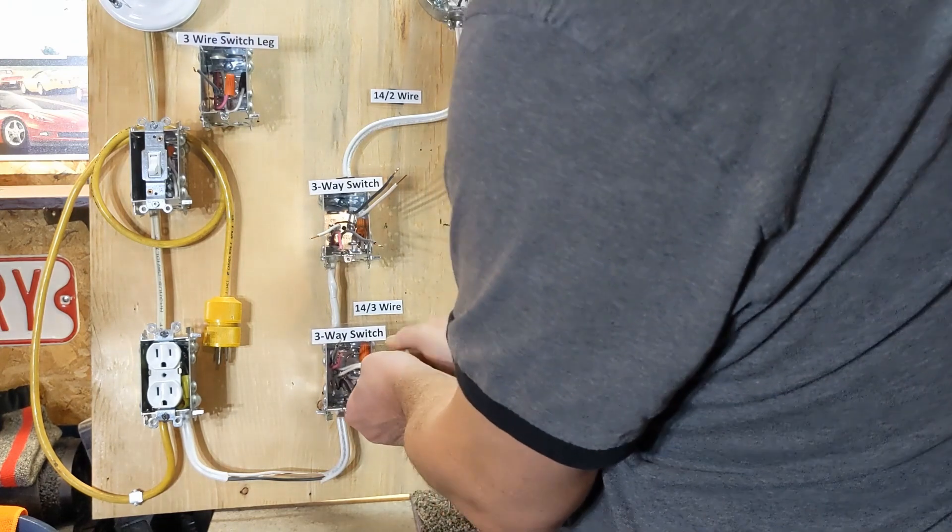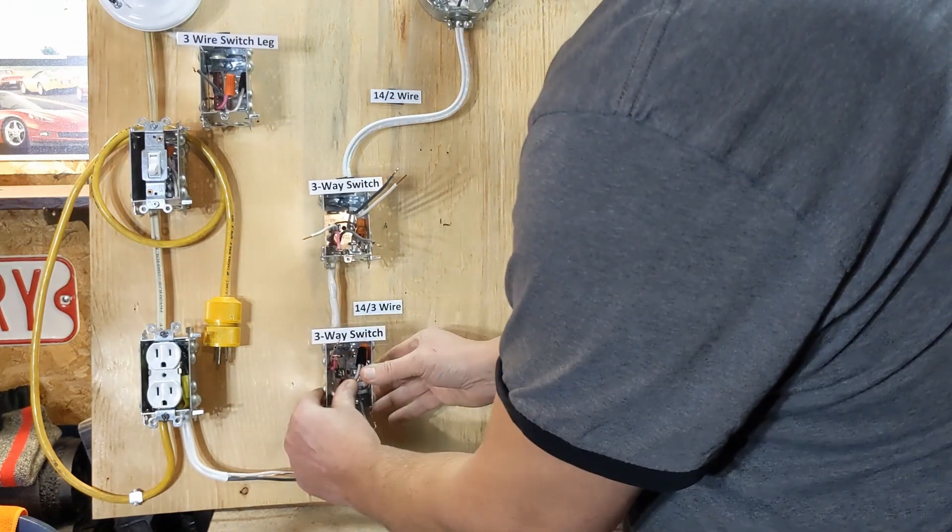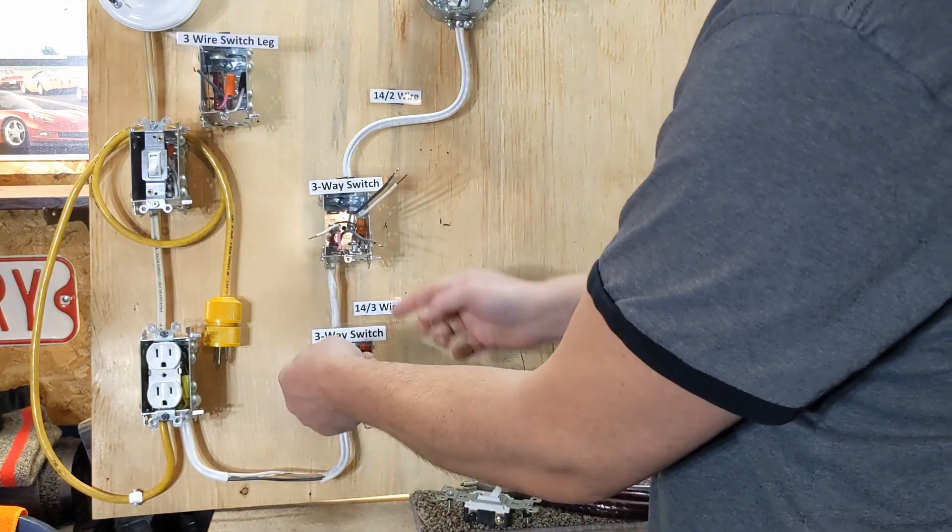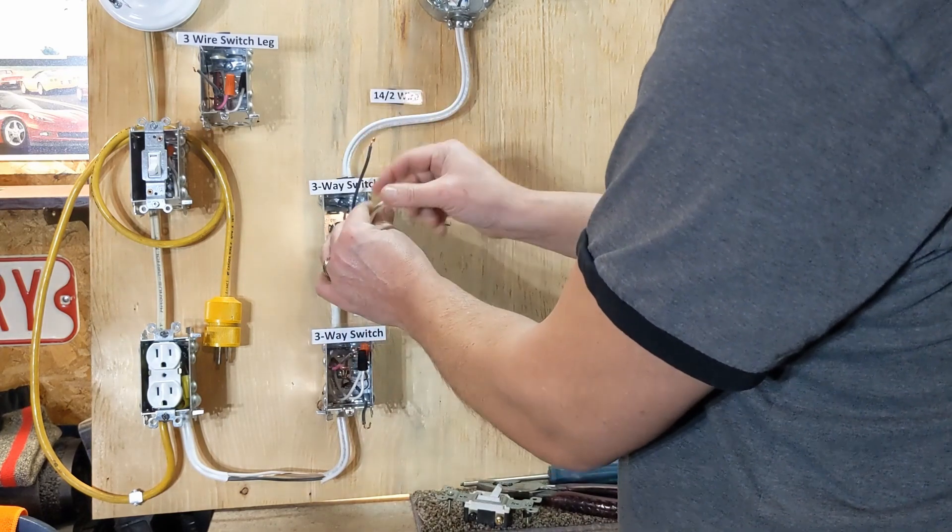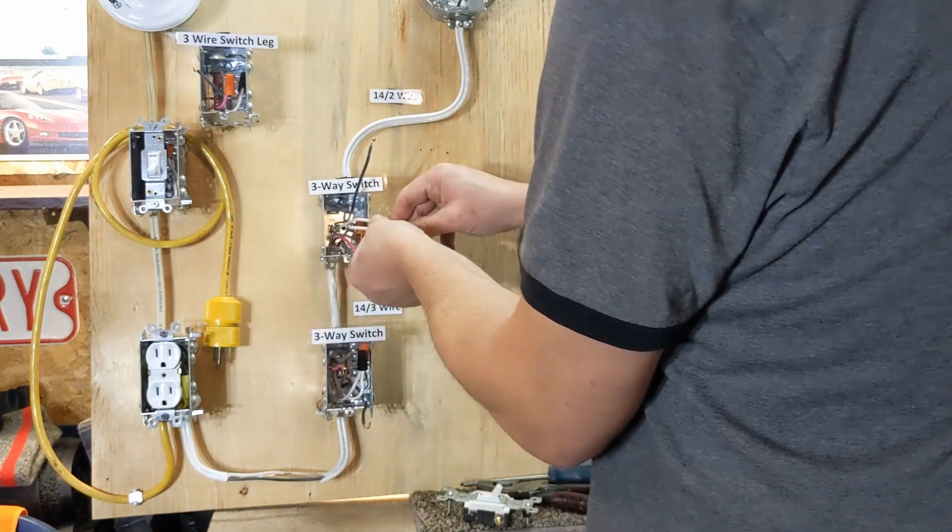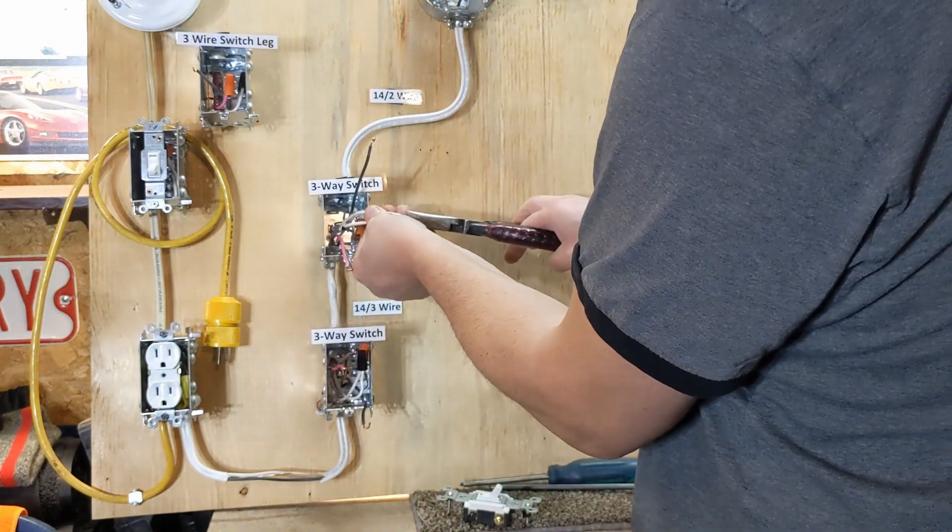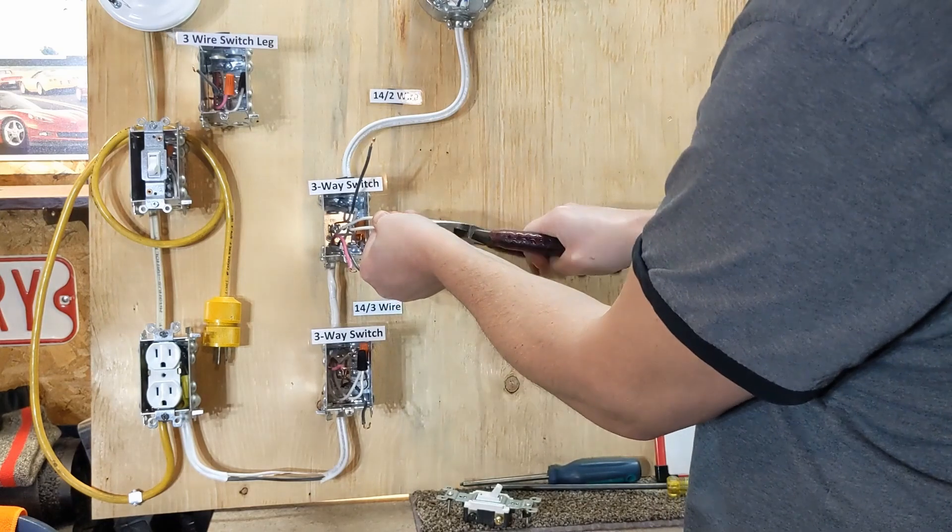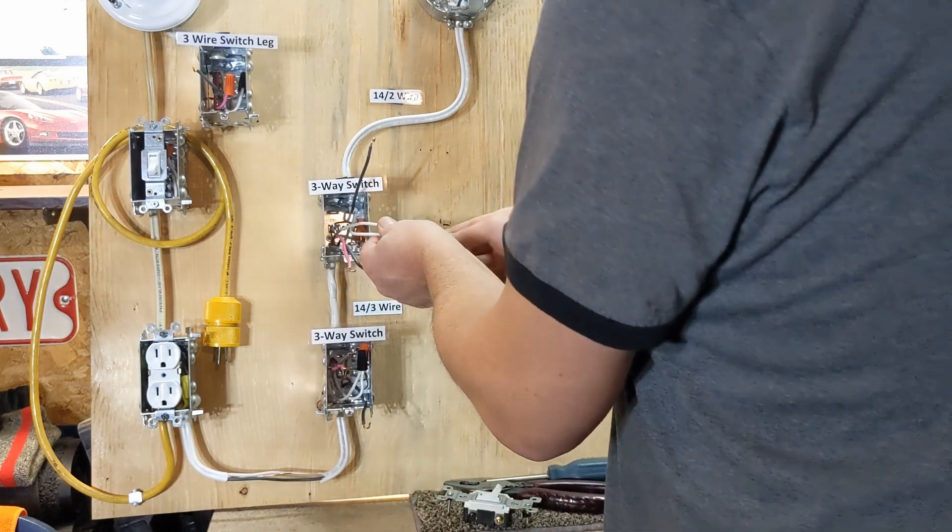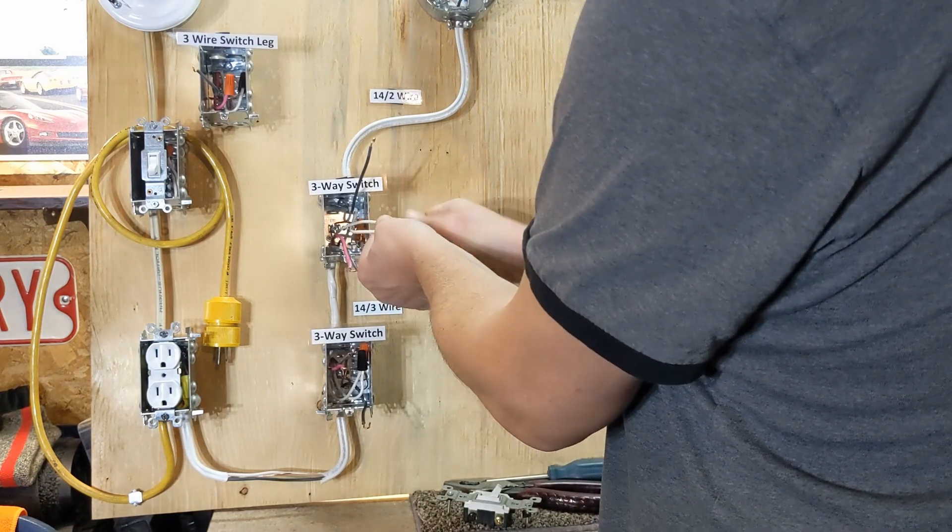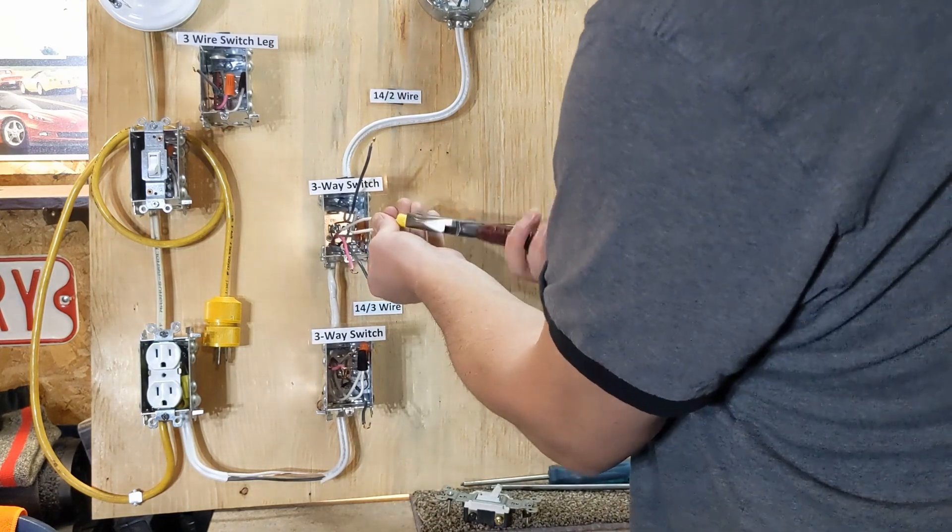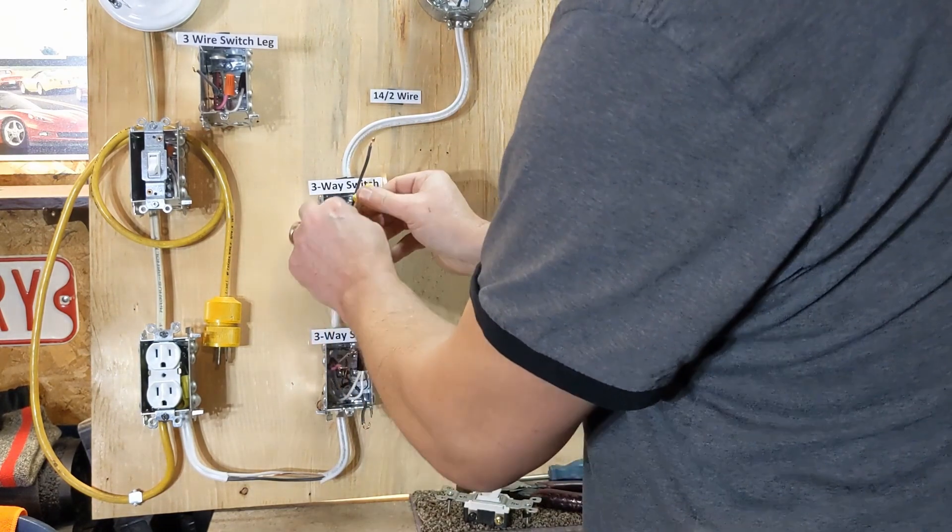So now we're left with our incoming black and our black and red from our three-way up here. Same thing, just carry that neutral through and tuck it out of the way.